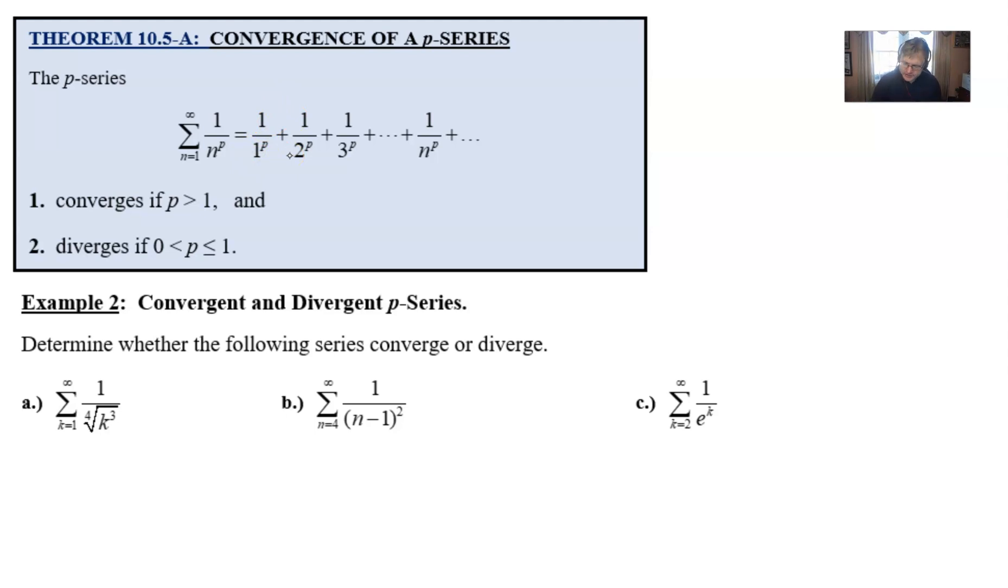It's either going to converge if that p is strictly greater than one, or it's going to diverge if that p is less than or equal to one. The p had to be positive as part of the series, and p is never going to be zero because it becomes trivial, causing your denominator to be one. Then you're just adding one plus one plus one, which isn't real exciting and won't converge. So there are your two situations: p greater than one converge, p less than or equal to one diverge.